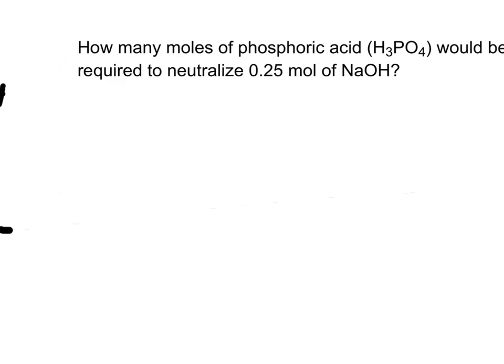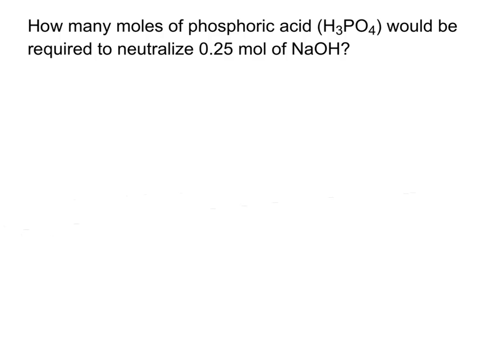Okay, so let's try solving a problem. We're going to have to calculate amounts. So in this problem it says, how many moles of phosphoric acid would be required to neutralize 0.25 moles of NaOH? When we're faced with a problem like this, we need to start by writing the chemical equation. So we have phosphoric acid, H3PO4, that's reacting with NaOH, so I'll just say plus NaOH.